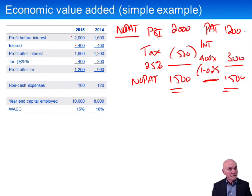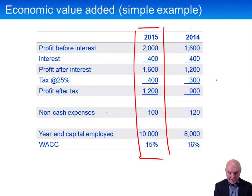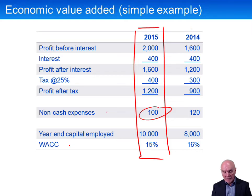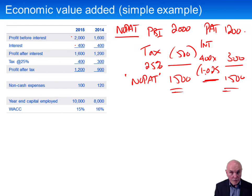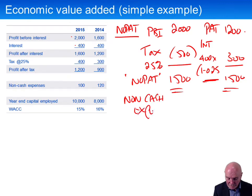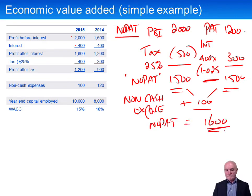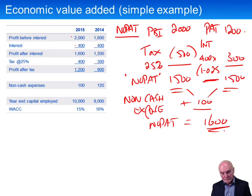What we then have to do is look at the notes. The non-cash expenses in that year are 100, and they shouldn't be deducted from NOPAT or from profit, so we add those back. So that gives us non-cash expenses plus 100. Our proper NOPAT, whichever way you calculate it, is going to be 1,600.